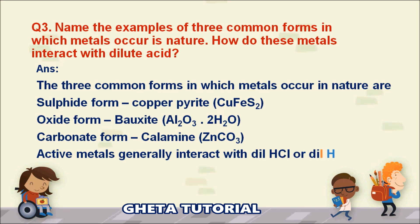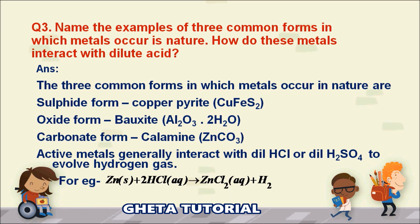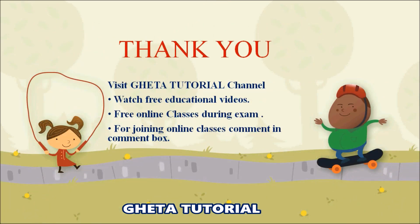The next part asks how these metals interact with dilute acids. Active metals generally react with dilute HCl or dilute H₂SO₄ to evolve hydrogen gas. For example: zinc + HCl → zinc chloride + hydrogen gas; and magnesium + HCl → magnesium chloride + hydrogen gas.